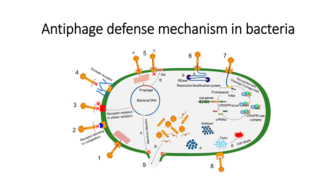In the third case, what happens is that there is a mutation of the receptors in the bacterial cells — the receptors that recognize the bacteriophage. After mutation, these receptors will not be able to recognize the bacteriophage, so the bacteriophage will not be able to infect the cell.